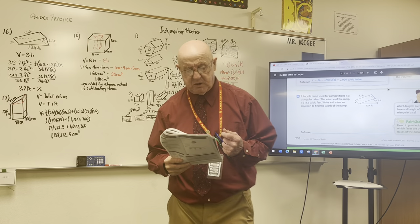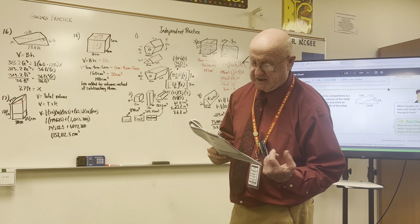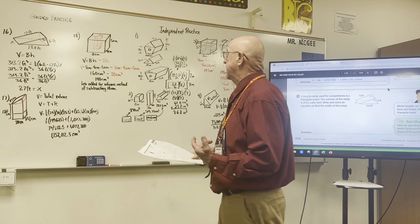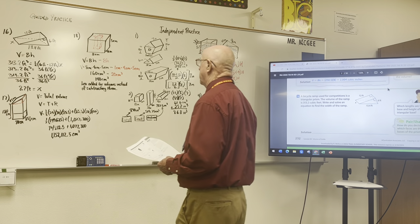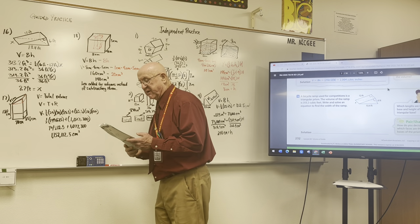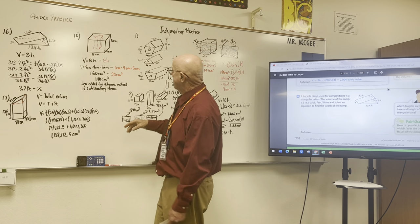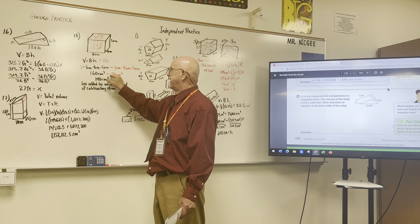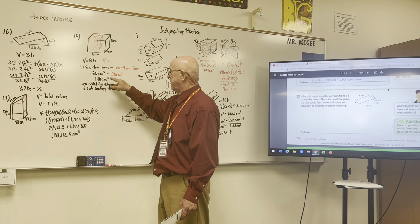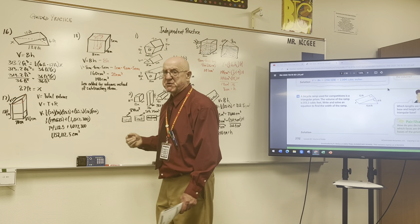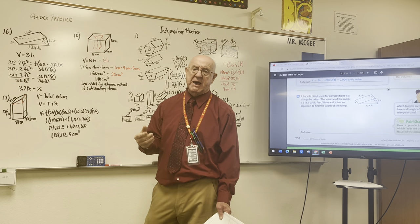Now, Leo chose D as the correct answer — 180. How did he get that answer? Well, Leo added the two volumes together instead of subtracting. So instead of subtracting, Leo added.